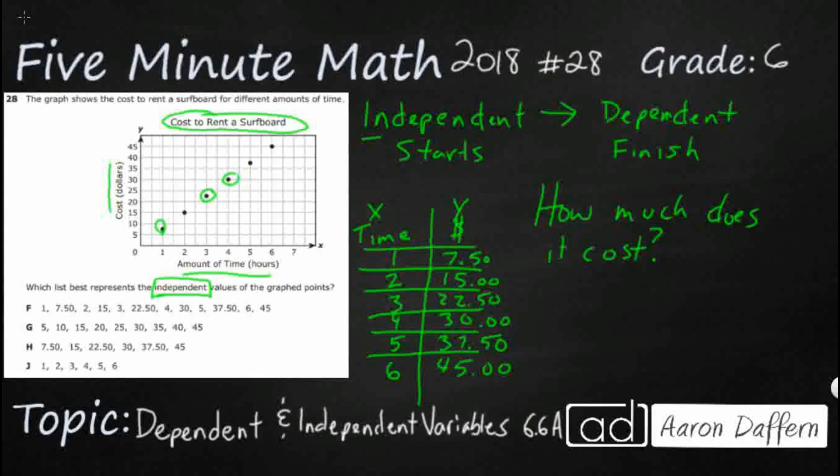He would say, well, it depends on how long. Or he might say, $7.50 per hour. Because it depends on how long you want to rent it. If you're going to rent it for one hour, it's going to cost you $7.50. If you want to rent it for four hours, it's going to cost you $30. So the cost changes based on how long you're going to rent it.